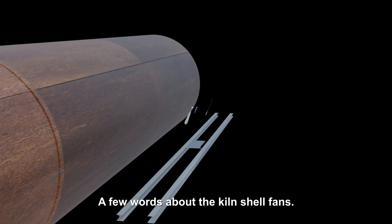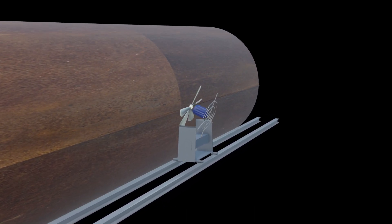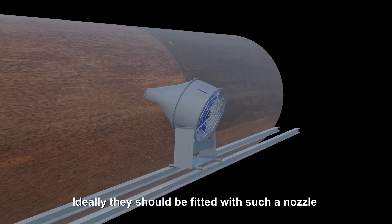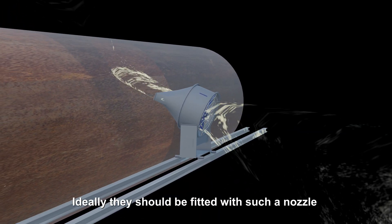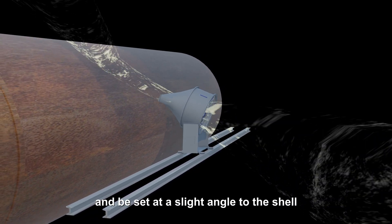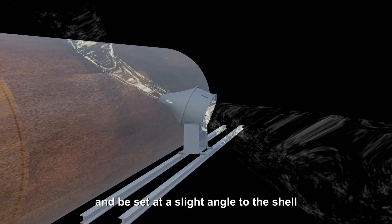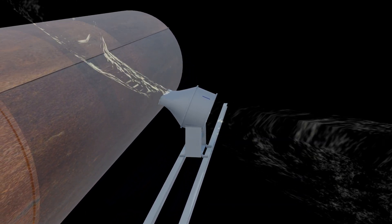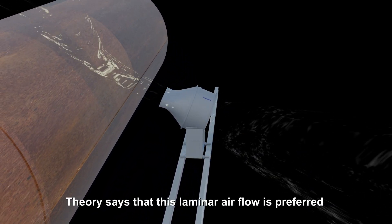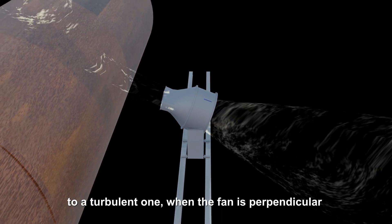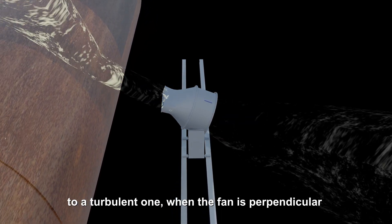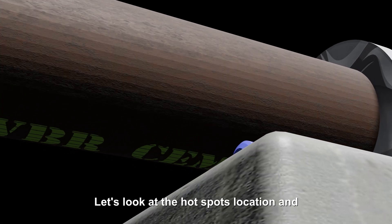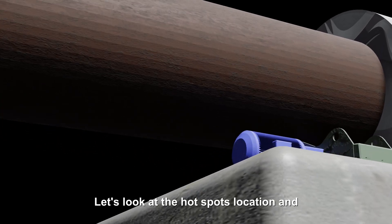A few words about the kiln shell fans. Ideally they should be fitted with such a nozzle and be set at a slight angle to the shell to cut away the heat waves on the shell surface. Theory says that this laminar airflow is preferred to a turbulent one when the fan is perpendicular to the shell.